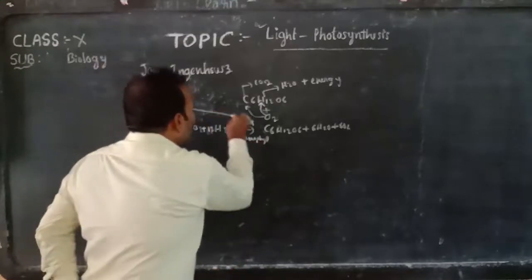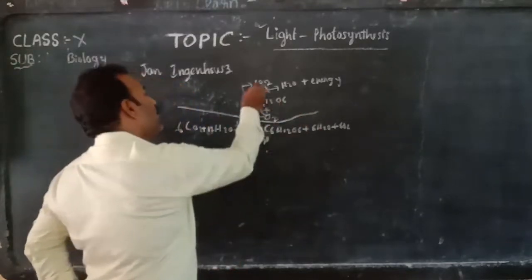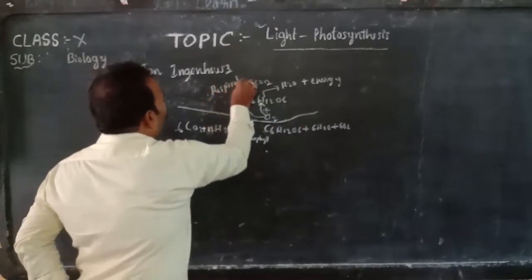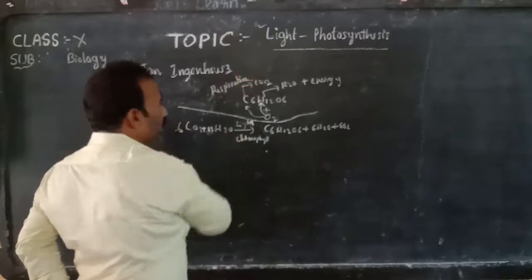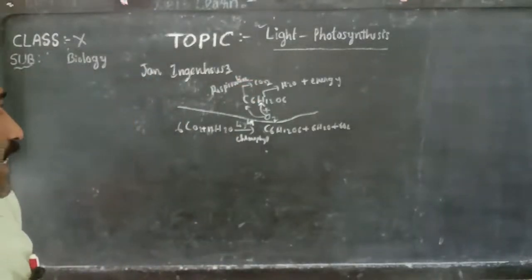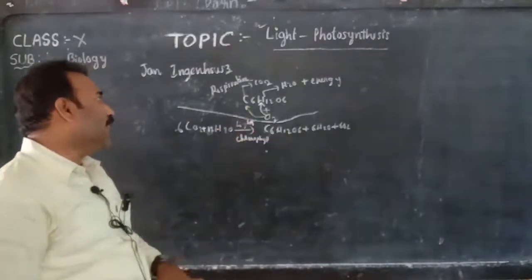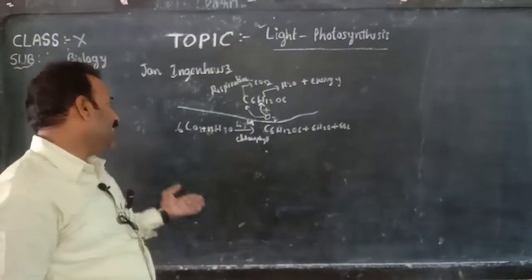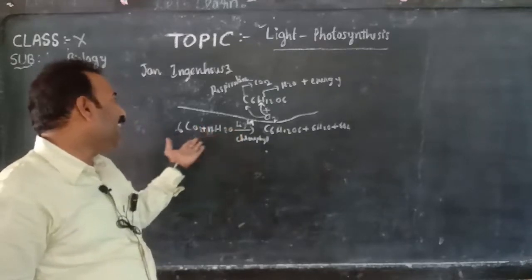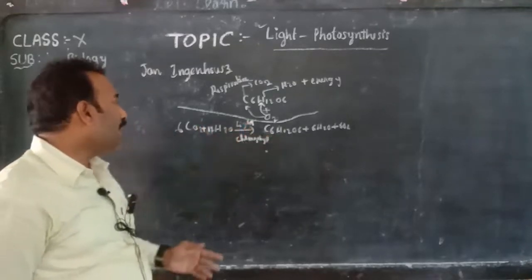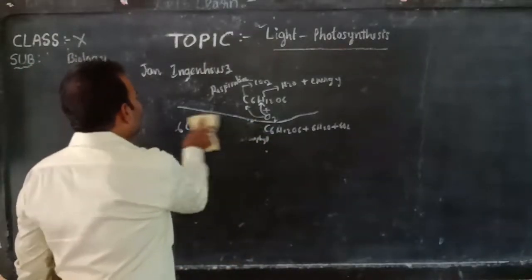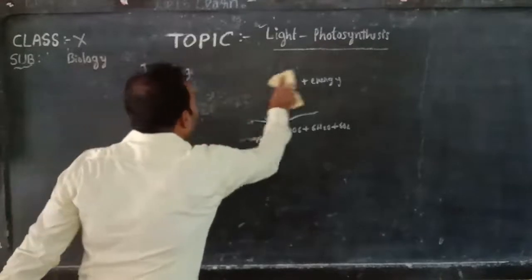Photosynthesis is the reverse process of respiration. During respiration, oxygen is added to the food and energy is produced. During photosynthesis, light energy is utilized and carbohydrate is produced. So for photosynthesis, light is very essential. John Ingenhaus proved this.